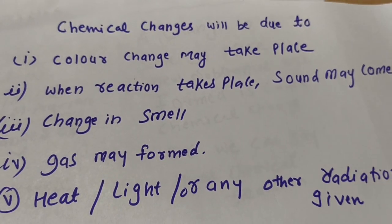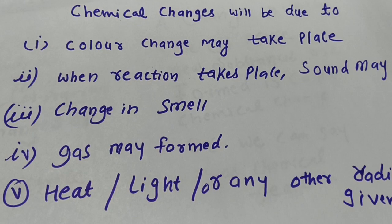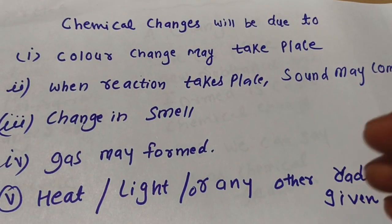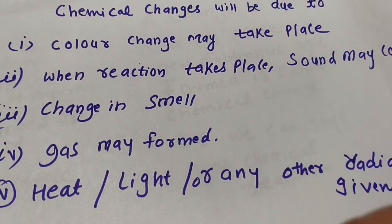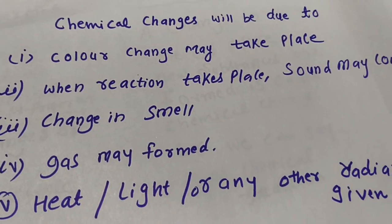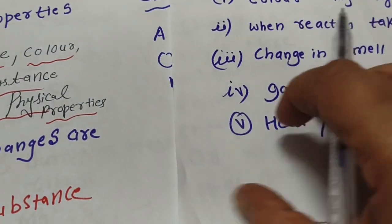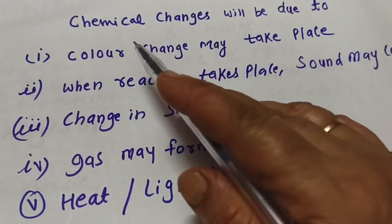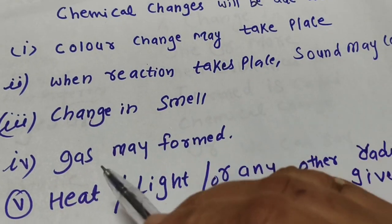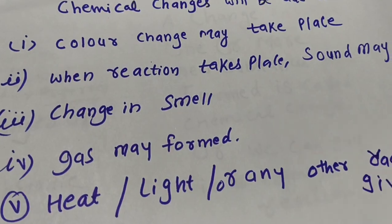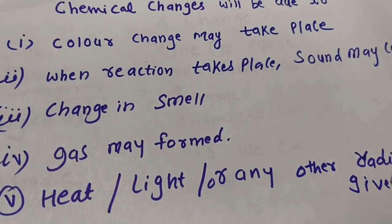One very important thing about chemical changes: if you leave food in a box for two or three days without a lid, it will start to smell and a color change will occur. This is a chemical change. Also, if you open a cold drink bottle that has been sitting for a few days, gas evolves and you hear an audible sound.